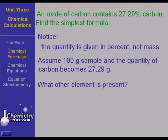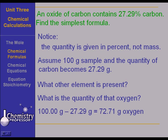What other element is present? Well, if it's an oxide, you know the other element is oxygen. And what is the quantity of that oxygen? We take 100 grams, the weight of the sample, minus the weight of the carbon that's in there and we get 72.71 grams of oxygen. Now, you can work it out. If you would like, stop this video and work it out. And then I will show you how to do it.